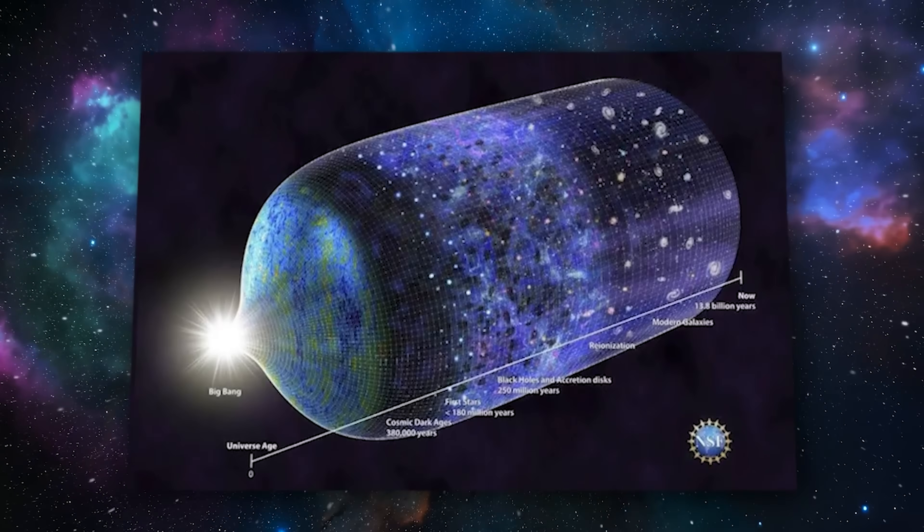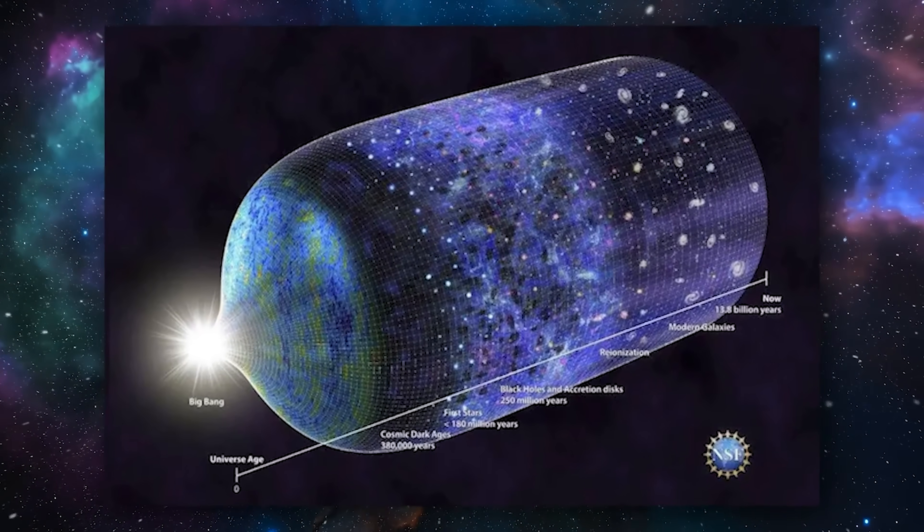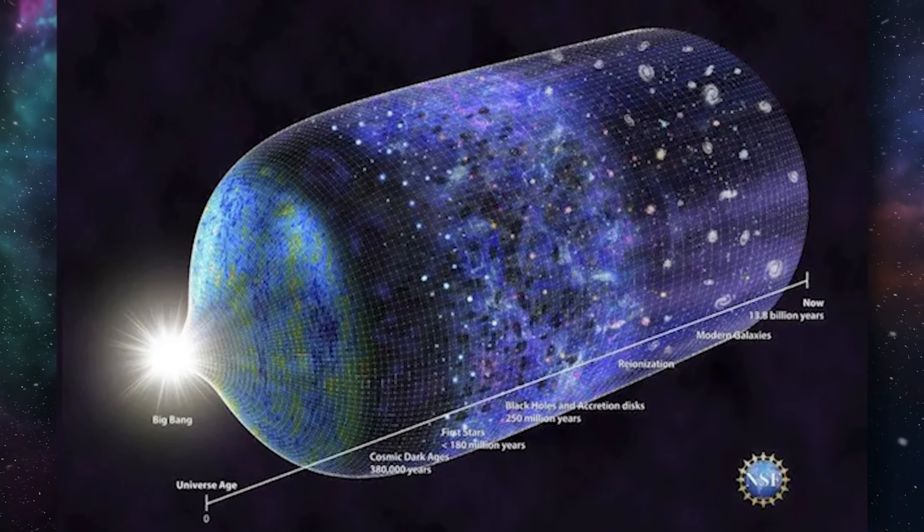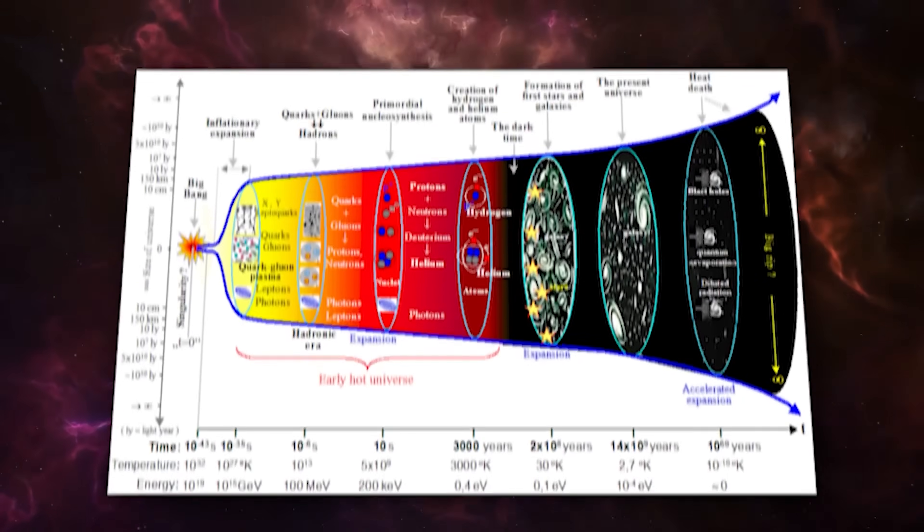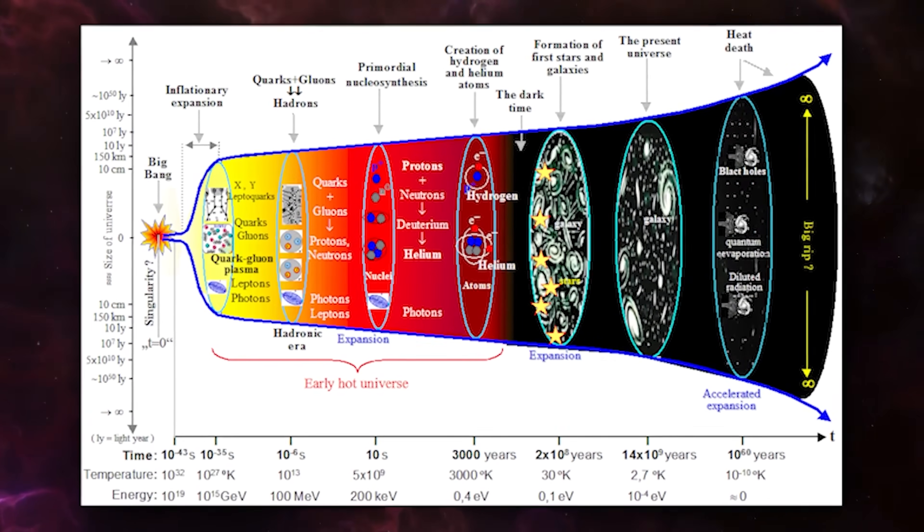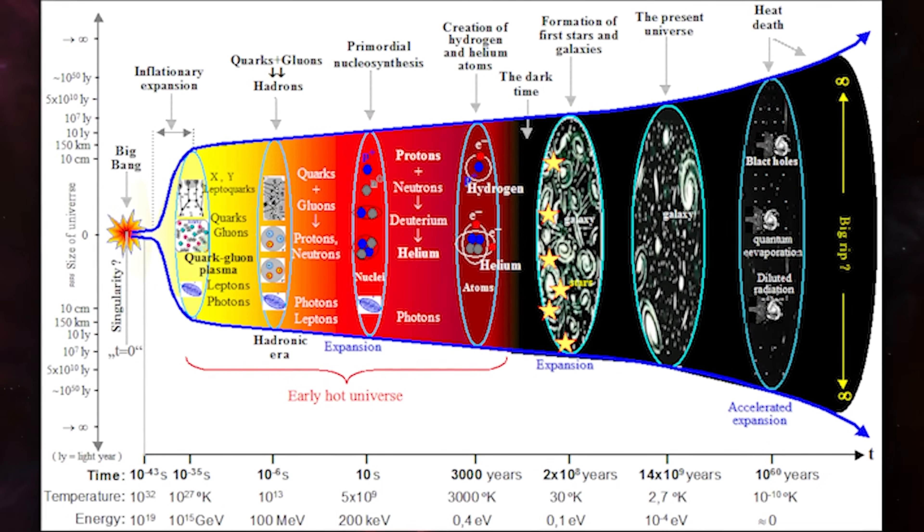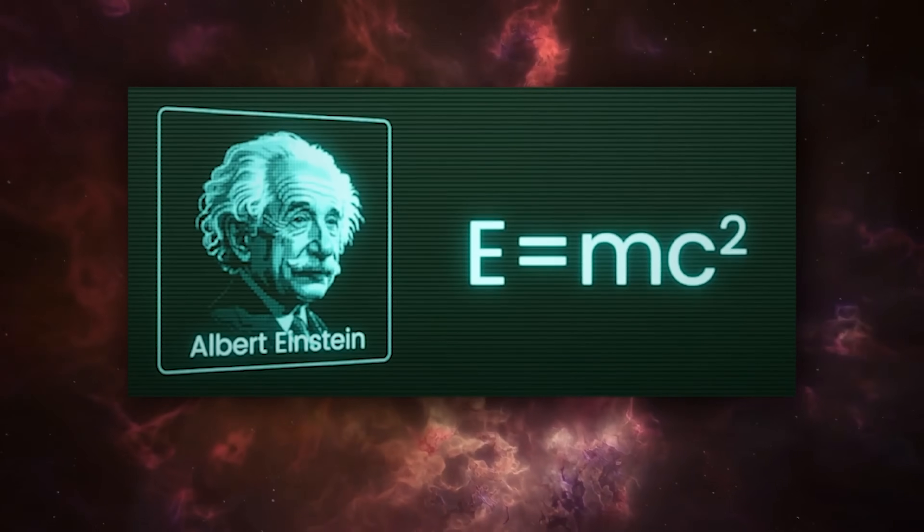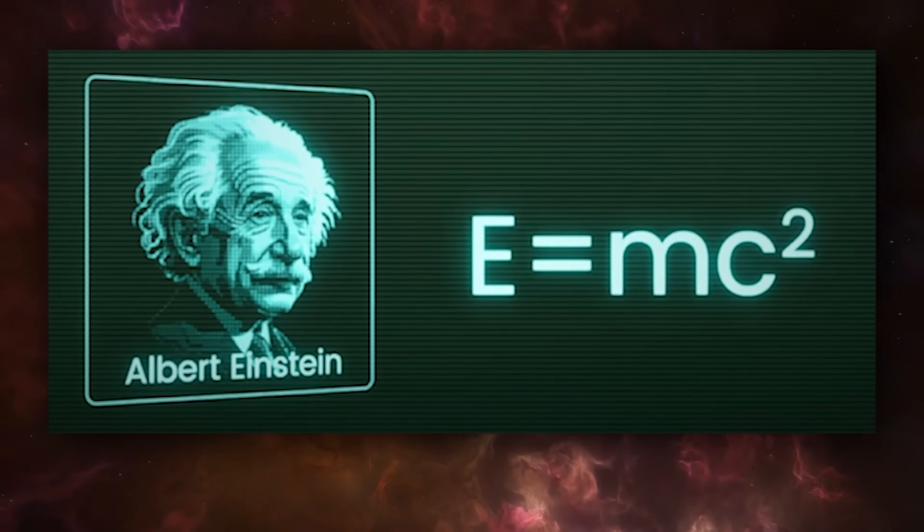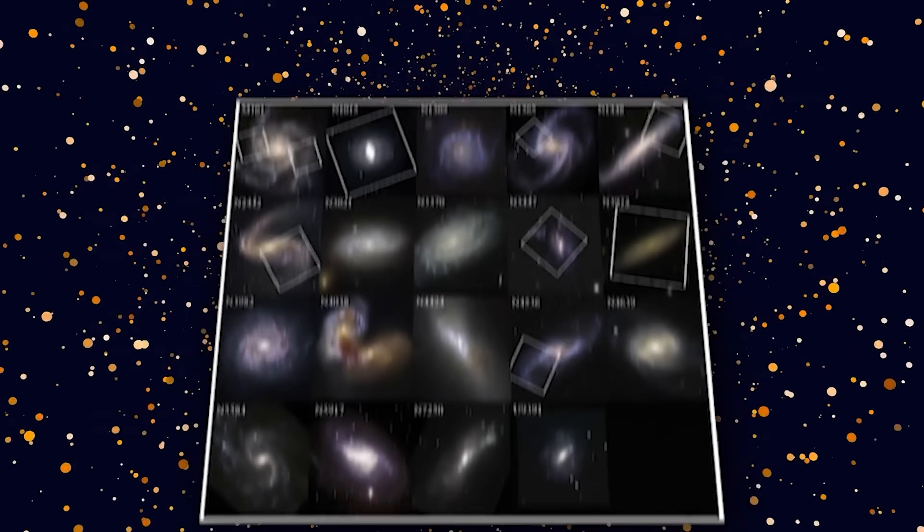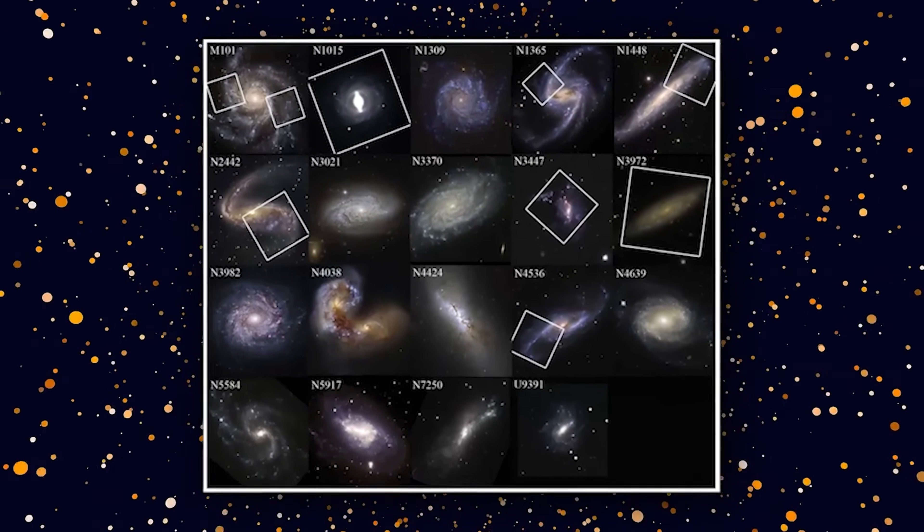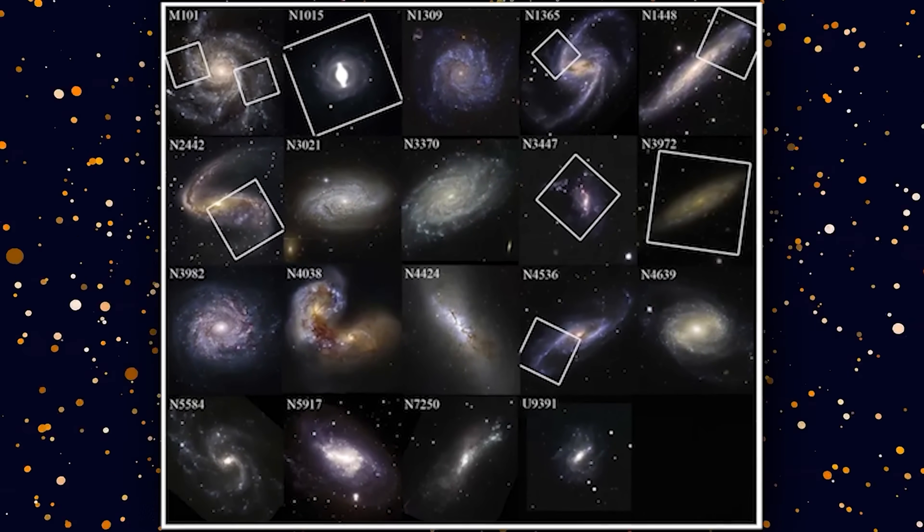At first glance, one might argue the Big Bang simply happened earlier than thought. But it isn't that simple. Our cosmological models are deeply interwoven, a chain of analogies rooted in Einstein's theory of relativity. If observations don't fit these calculations, the entire framework risks collapse.